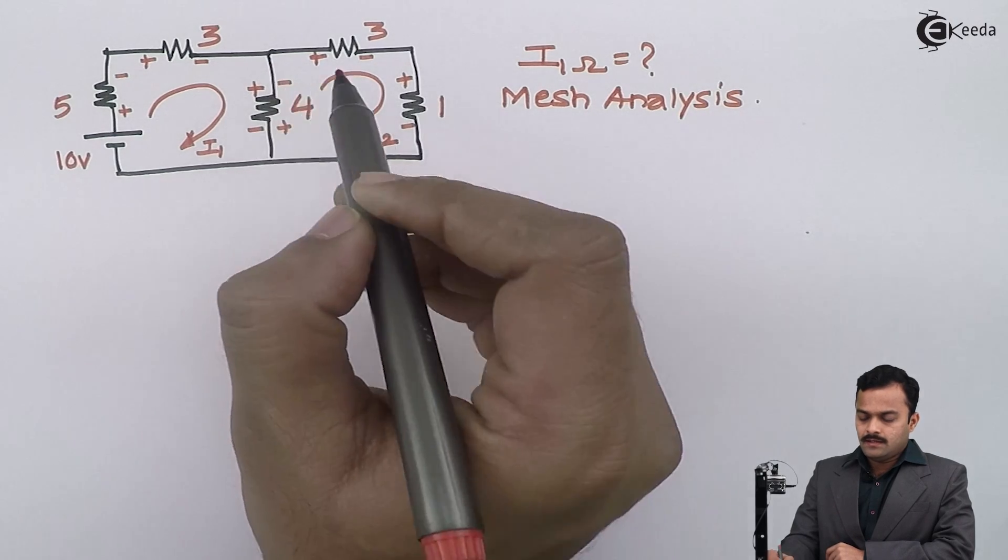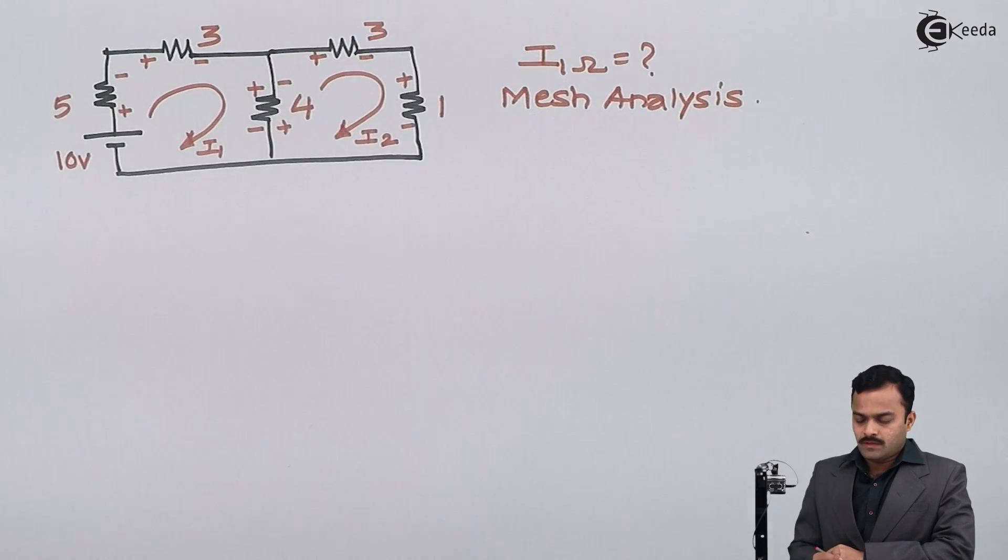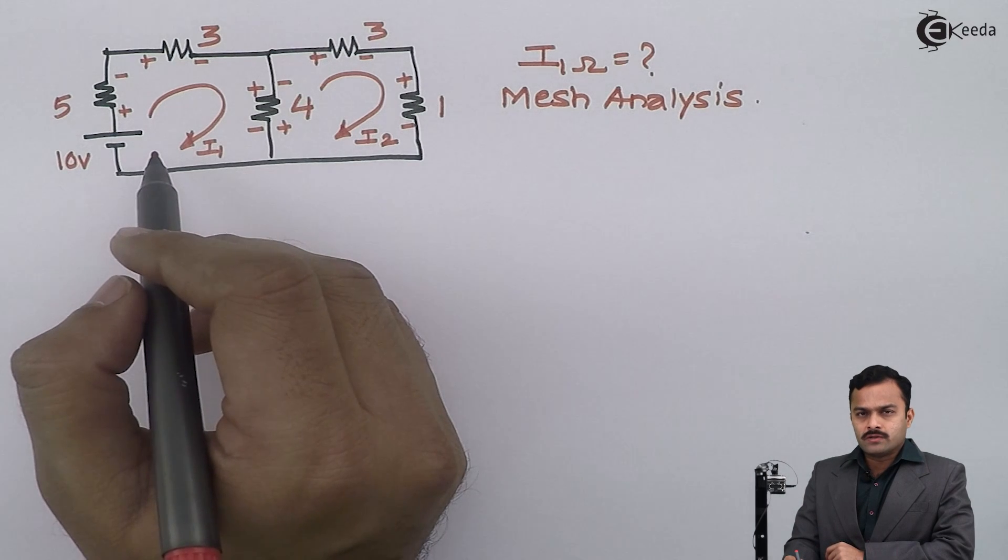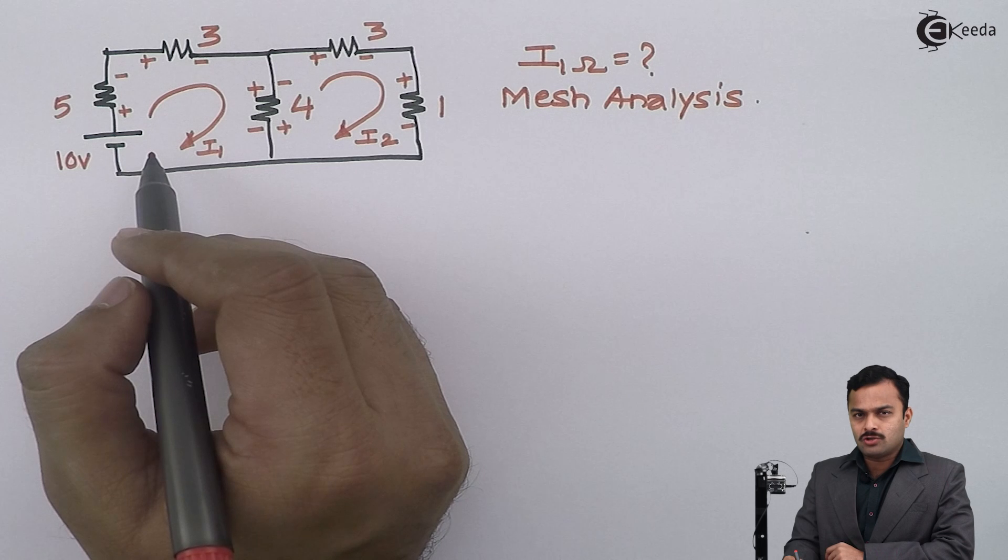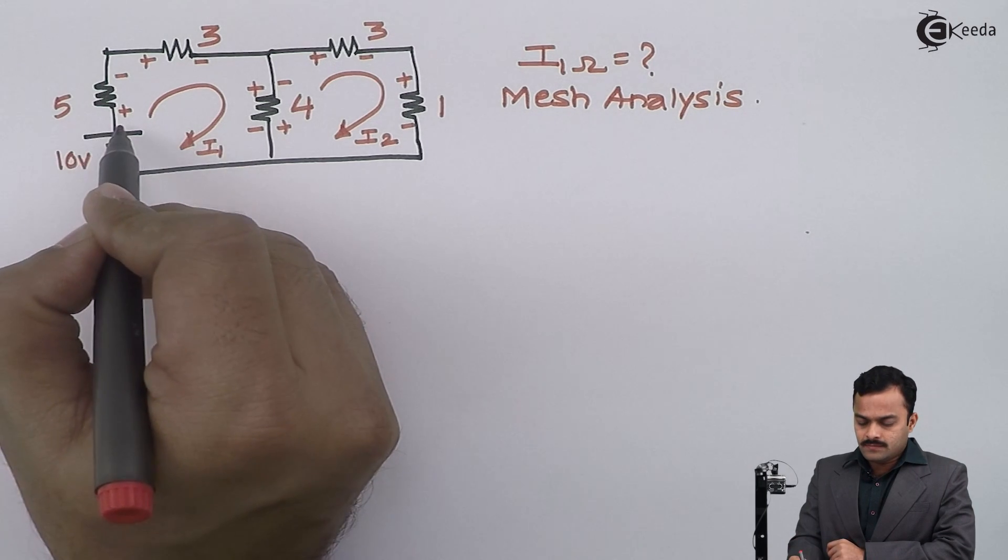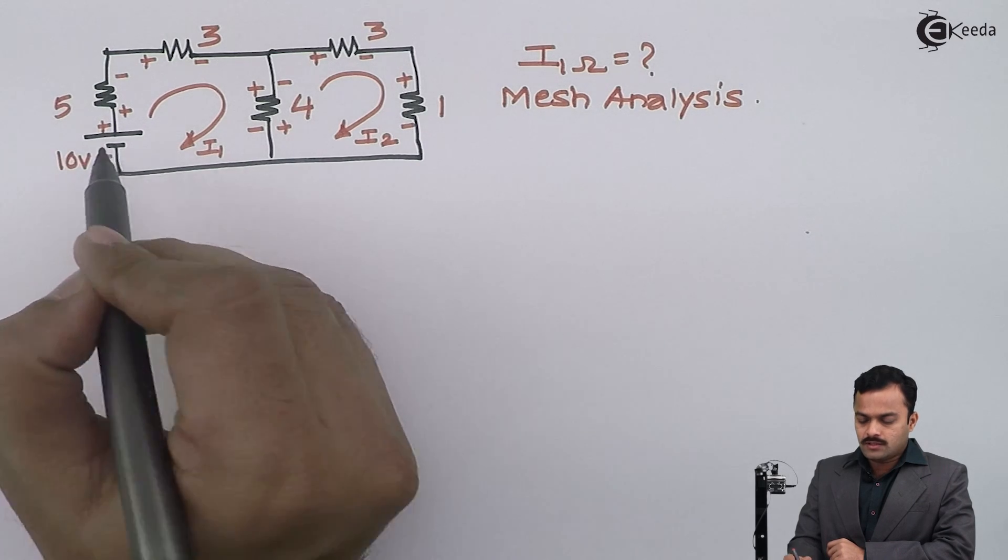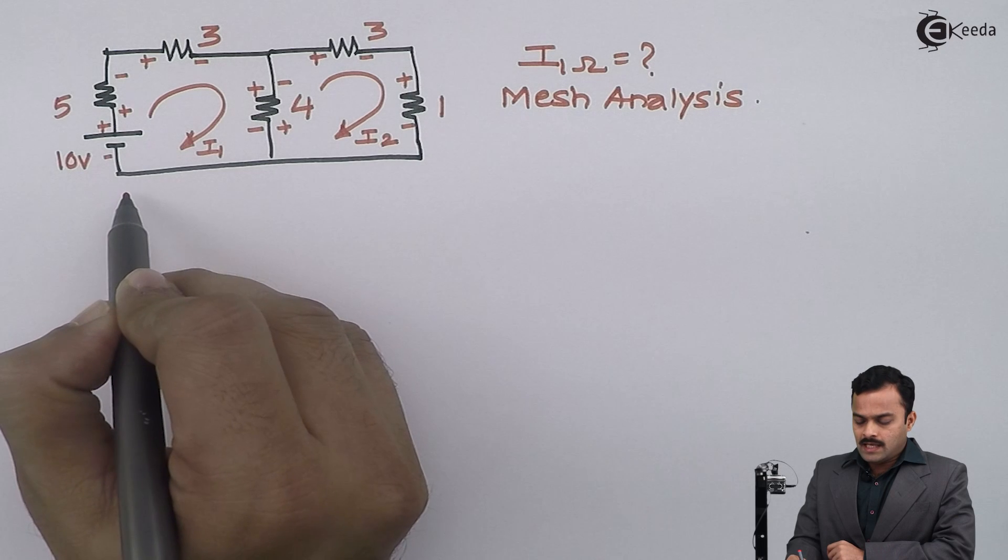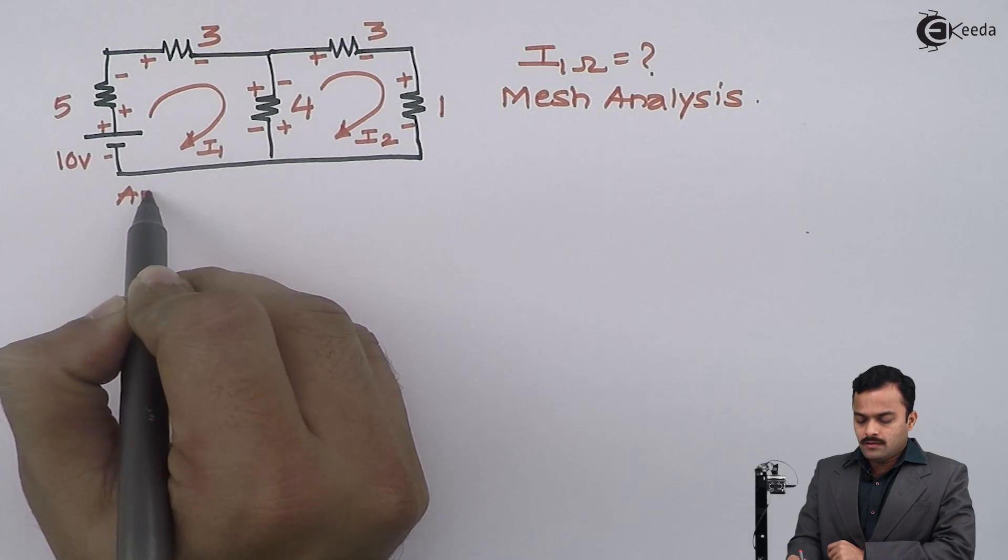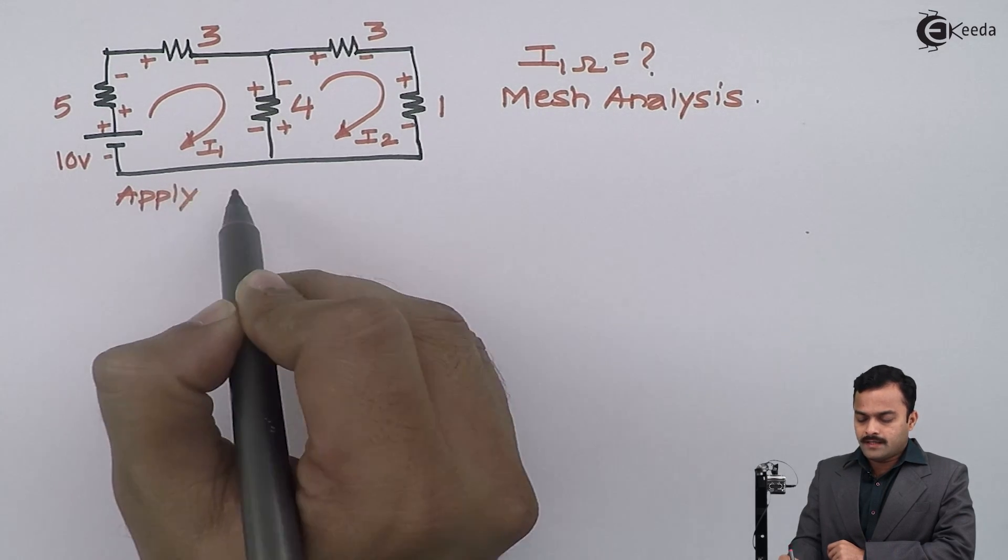Now there is one voltage source. The polarity of voltage does not depend upon the direction of current but it will be fixed - longer arm having the positive polarity and shorter arm will be negative. Then I apply KVL to both the loops.